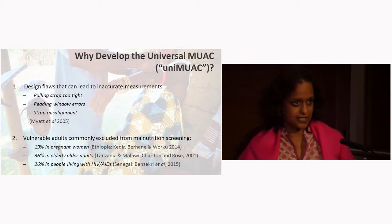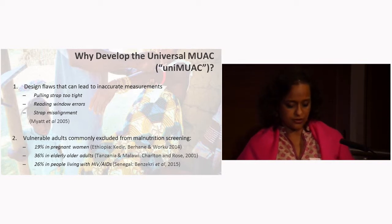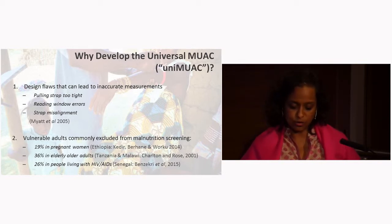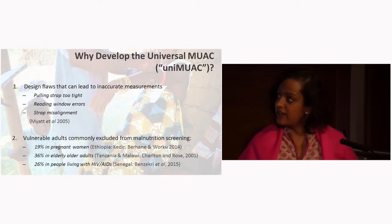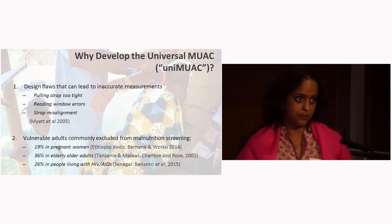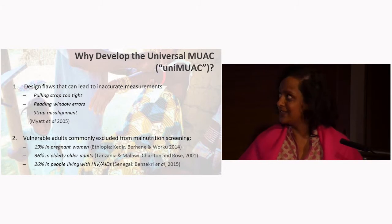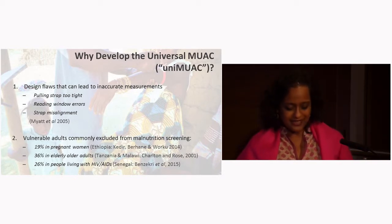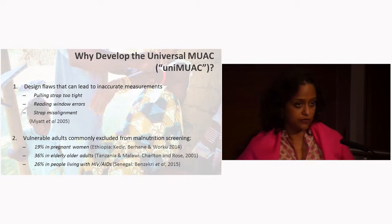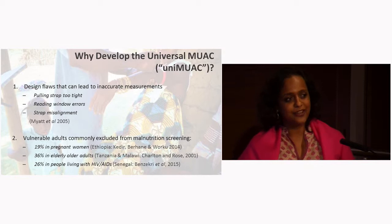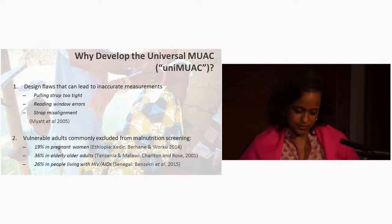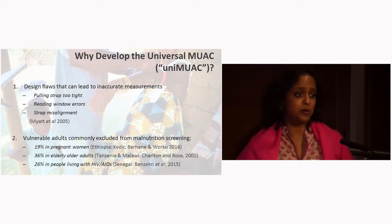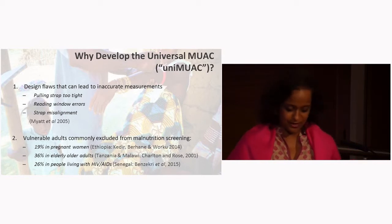In fact, there are actually MUAC strips for older age groups, but they're rarely used. So we linked with Help Age International and a group of nutrition experts to develop a double-sided MUAC strip, both for adults and for children, hence a universal MUAC or uni-MUAC, in part as an advocacy tool to increase awareness of the need to look for malnutrition in these groups — and not only, as someone suggested on the review committee, to solve the problem of just not having enough pockets to carry around two strips.